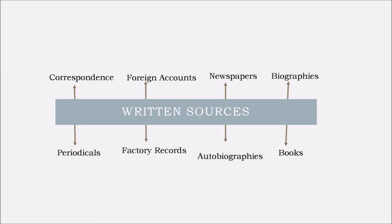As you can see in this diagram about the written sources, you can see correspondence, foreign accounts, newspapers, biographies, periodicals, factory records, autobiographies and books as part of written sources.